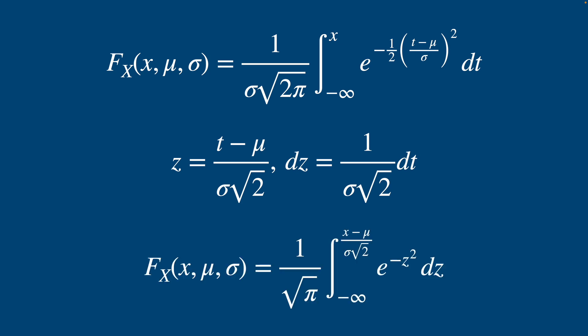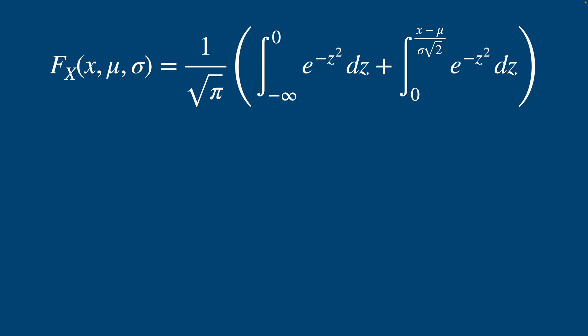Now substituting those in, you'll notice that our integral already starts to look more like the error function after we cancel out some √2s and some σs in our fraction on the left. We'll split up the interval at zero.